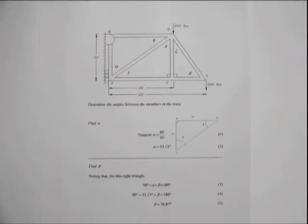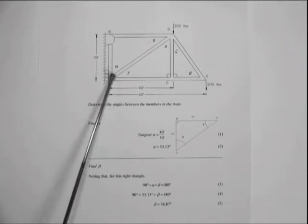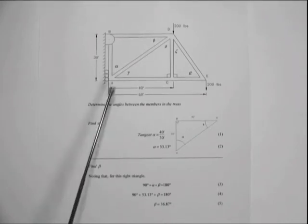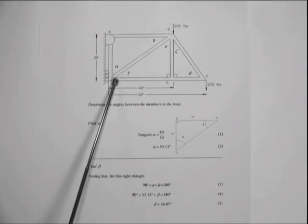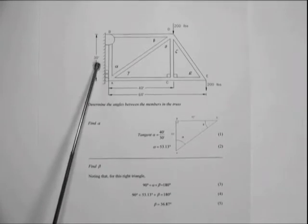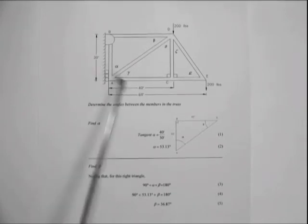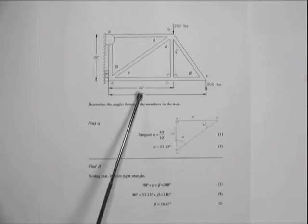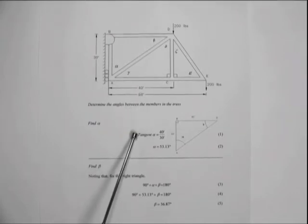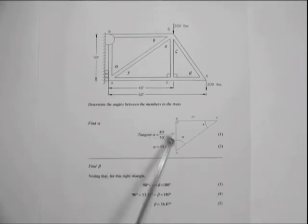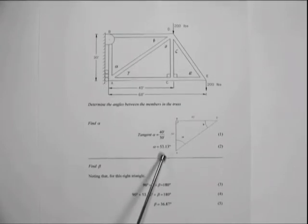Using step one of our process, we will first determine the angles that occur at each member of the truss. First, we will find the angle alpha. We know that for angle alpha the vertical height is 30 feet and the horizontal is 40 feet. Therefore, the angle alpha can be determined by noting that the tangent of alpha equals 40 feet divided by 30 feet. This results in an angle of 53.13 degrees.